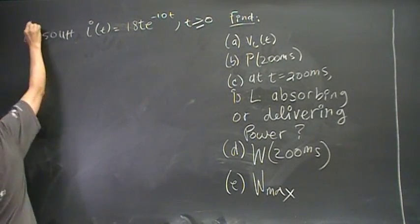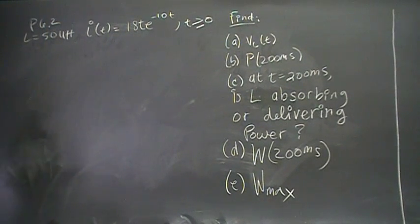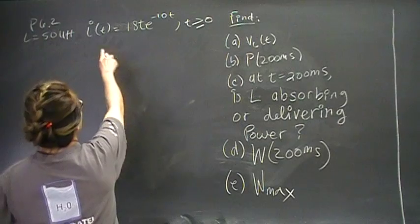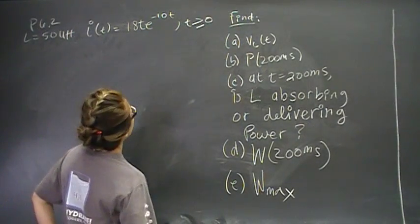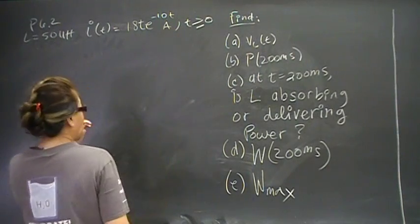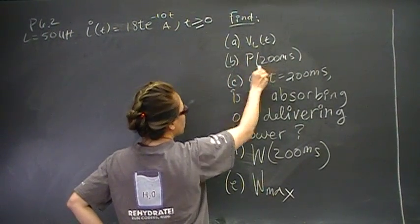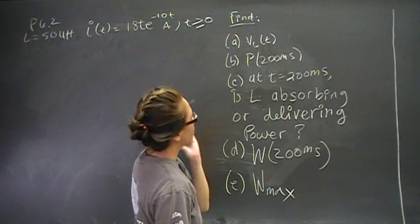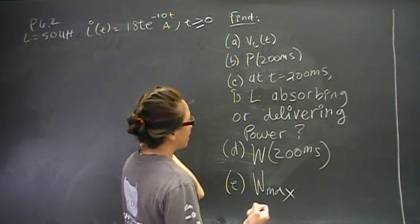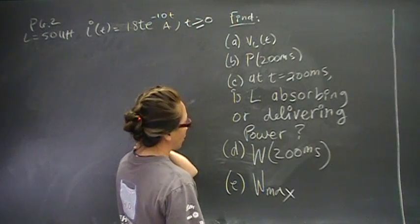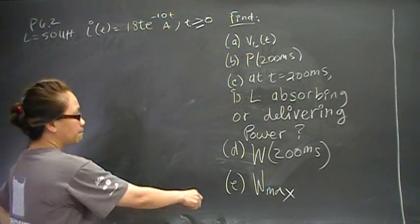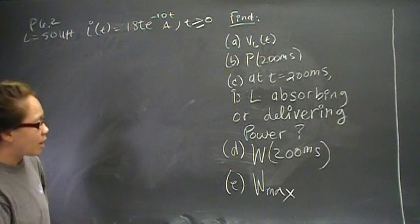Hi, you guys. So this is problem 2 from chapter 6. We have an inductor with value of 50 microhenrys and a known current of 18t times e to the negative 10t amps. We want to find the voltage, the power at 200 microseconds, and we want to find out at time 200 microseconds, is the inductor absorbing power or is it delivering power? We also want to find the energy at 200 microseconds and maximum energy of the system.